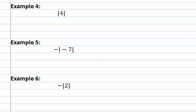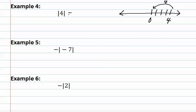In example four, we look at the absolute value symbol again. It asks: what is the absolute value of four? If we draw a number line to assist us, we can see that four is a distance of four units from zero. This means that the absolute value of four is four. Remember, absolute value should always give us a positive answer.